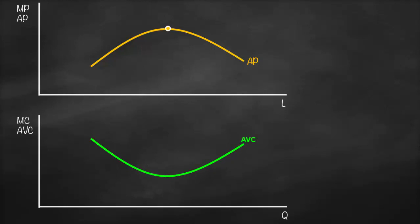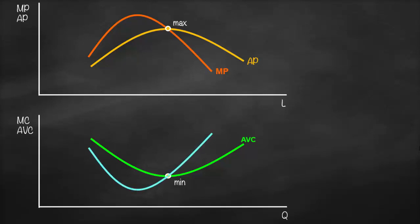The maximum of average product occurs at exactly the same point as the minimum of average variable cost. Drawing the marginal product curve, it intersects average product at its maximum. Similarly, the marginal cost curve intersects average variable cost at its minimum.